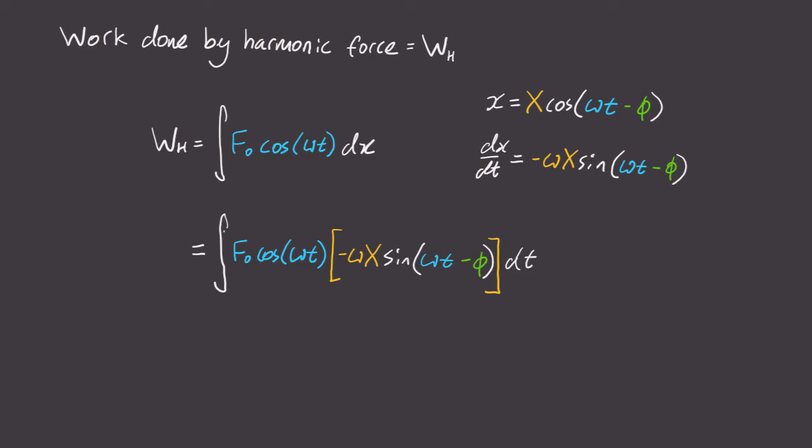Now what should our bounds be? Well, it's really up to us. Let's say we want to find the work done by this force over one full oscillation of our block. Well, one oscillation lasts t equals 2 pi over omega seconds, so let's integrate from 0 to 2 pi over omega.